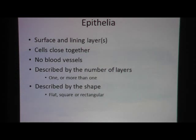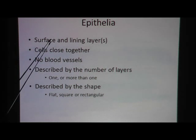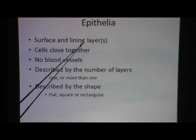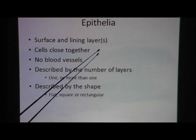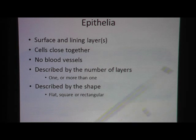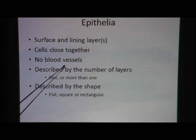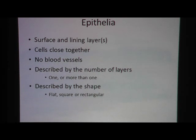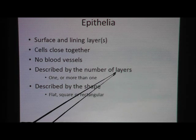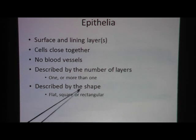Let's review epithelia. By definition, it must be a surface and it must be lining something. These cells will be found close together so there's no gap between the cells. There are no blood vessels in epithelial tissue, and we name them by the number of layers of cells as well as the shape of the cells.